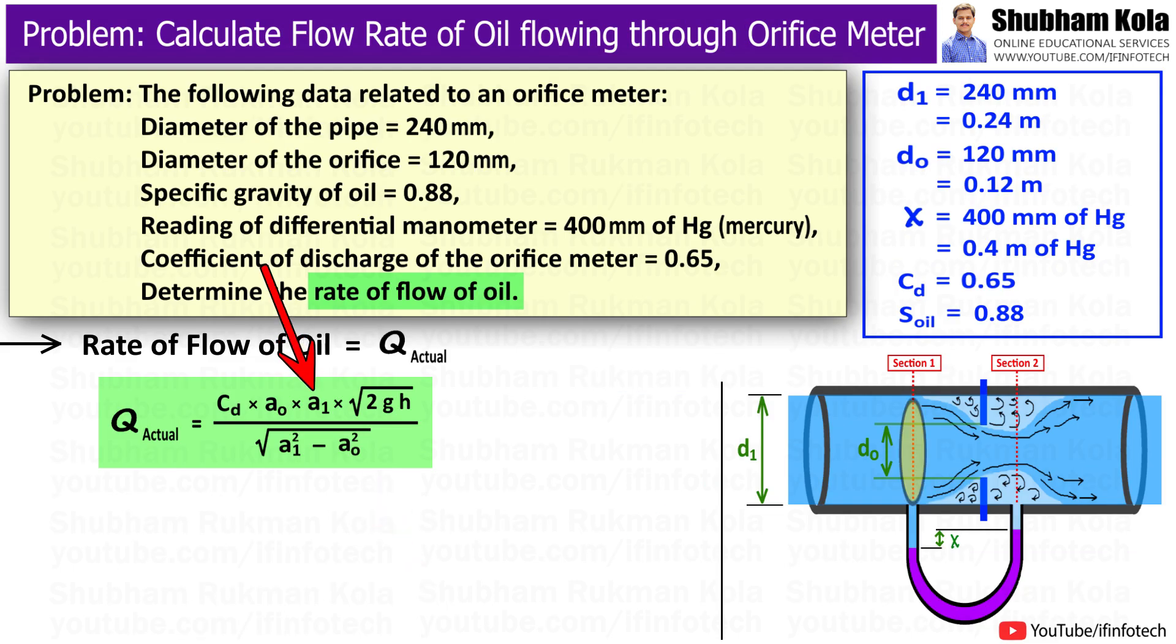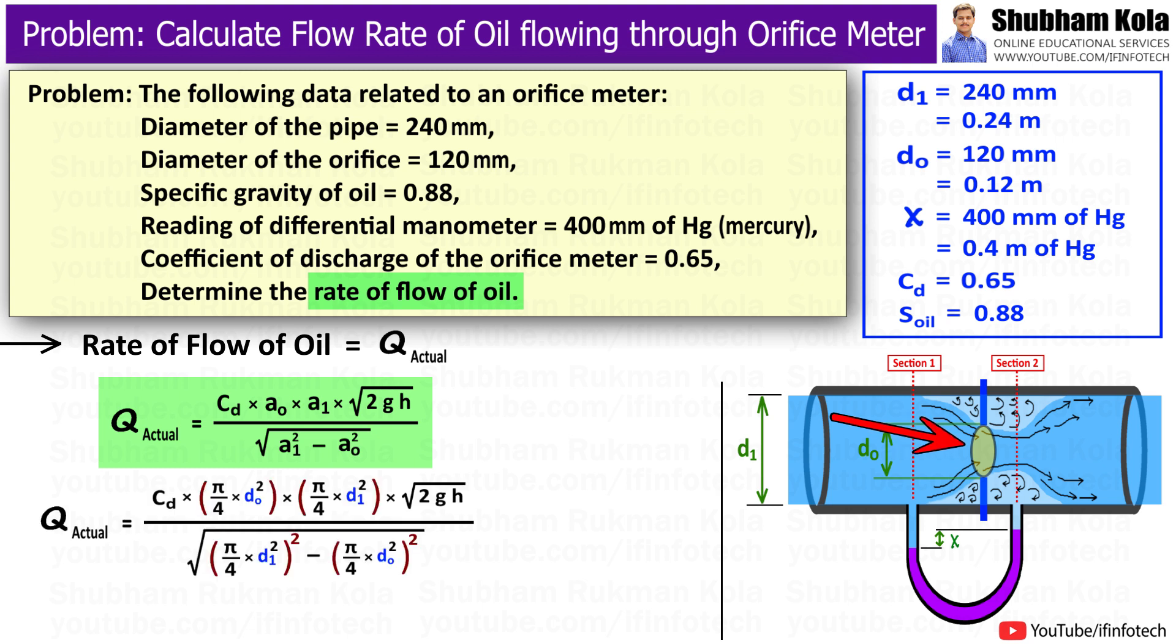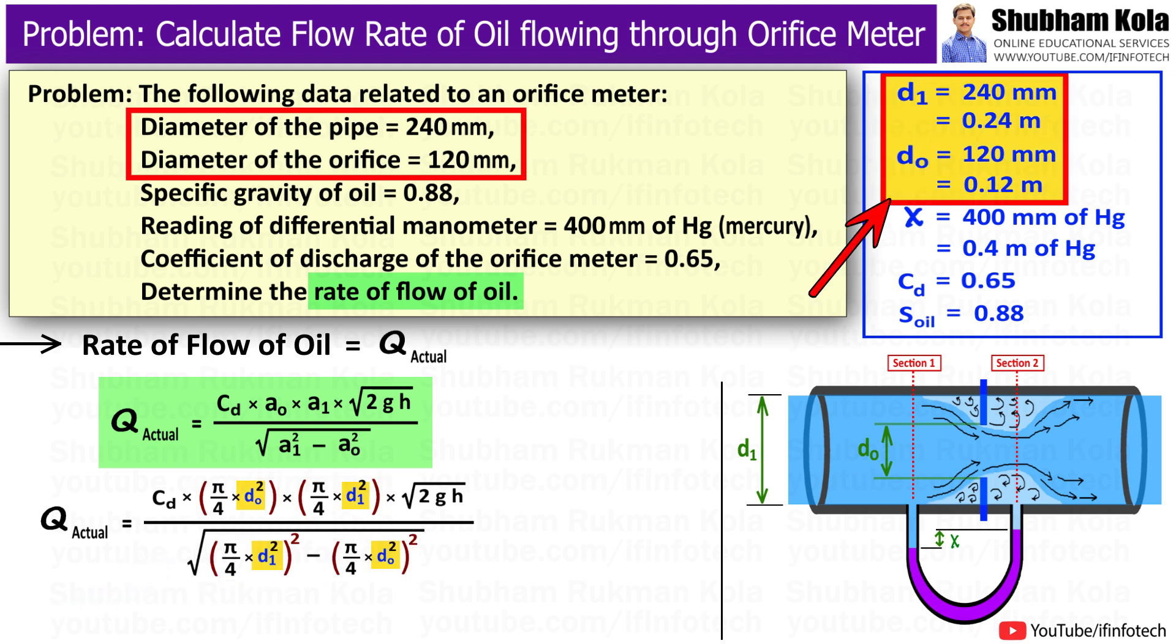Here A1 is the area of pipe at section 1 and A0 is the area of orifice. We know that area equals π/4 times diameter squared, and the values of diameters d1 and d0 have been given in the problem.